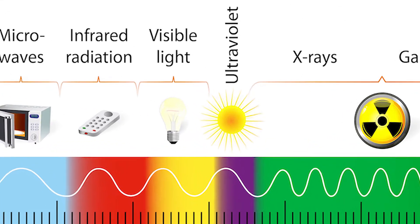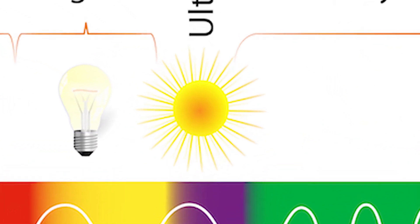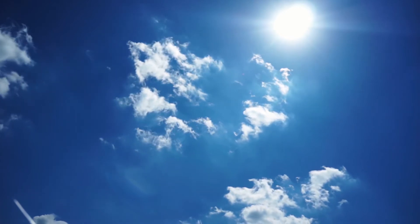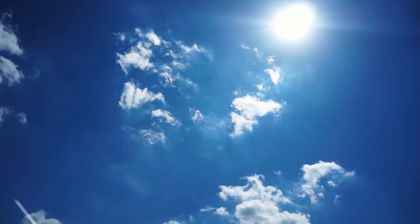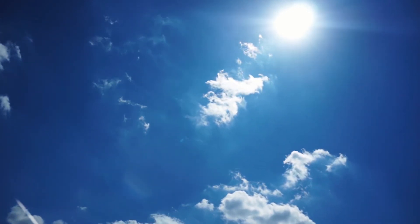The Sun is the largest producer of UV radiation. Solar emissions from the Sun include visible light, heat, and ultraviolet radiation.